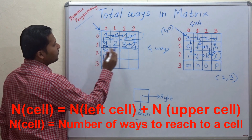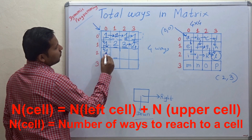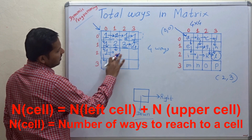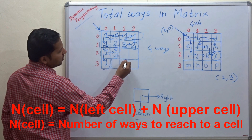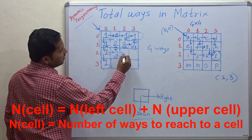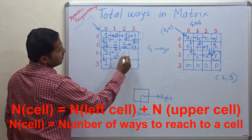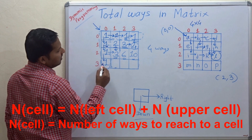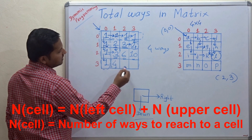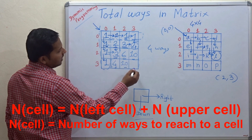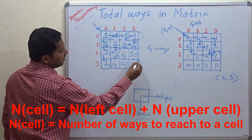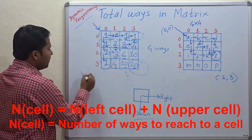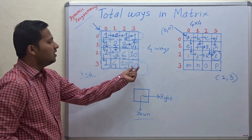Let's do it fast now. For the next cell: 1 plus 2 equals 3. For the next cell: 3 plus 3 equals 6. For this cell: 4 plus 4 is... wait, 4 plus 6 is 10. And for the last cell: 10 plus 10 is 20. So to reach the last cell in this 4x4 matrix, there are a total of 20 ways.